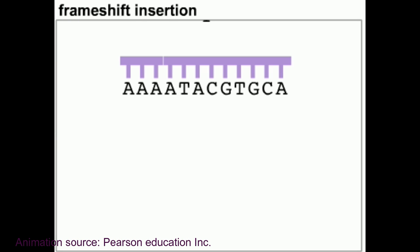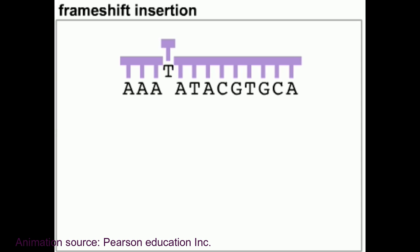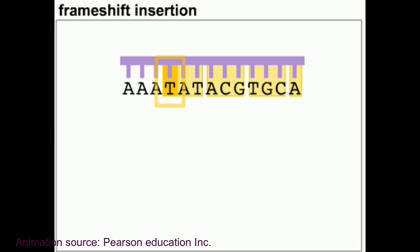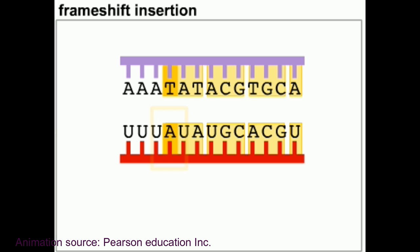Frameshift mutations usually lead to non-functional protein production. Now let's look at the types of frameshift. Frameshift insertion: if one or more bases are added to the DNA sequence, causing a shift in the reading frame of the resulting codons, the mutation is a frameshift insertion.